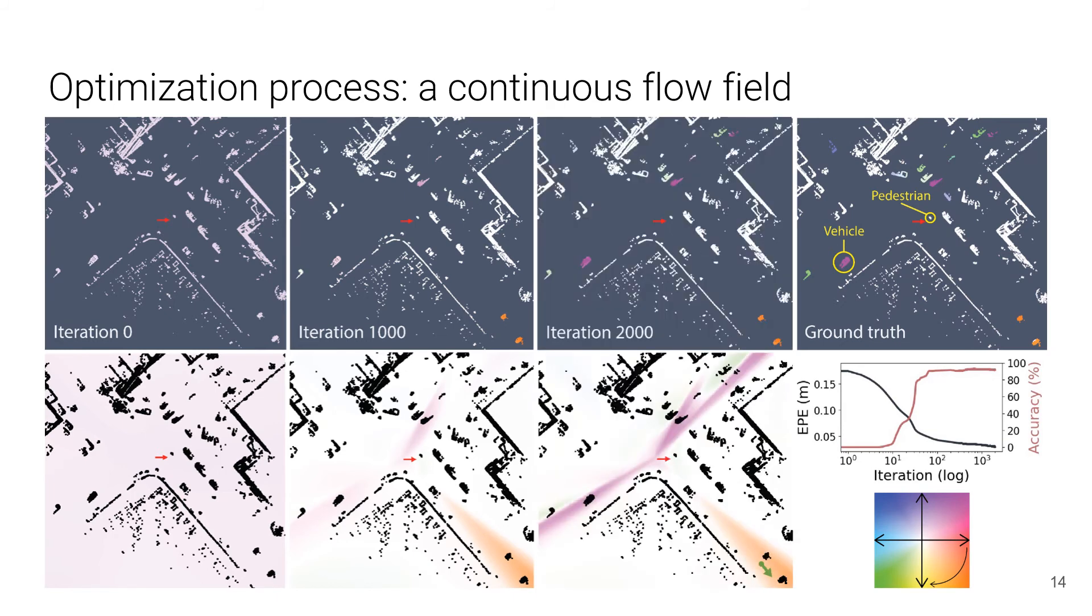Suppose we already have this continuous flow field at iteration 2000 at hand. When assembling a point around the orange region here, the direction of the flow vector will be pointing southeast as the green arrow shows, similar to the vehicles in the orange region.